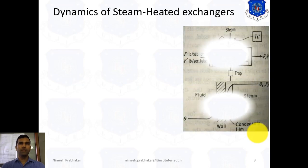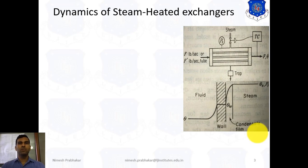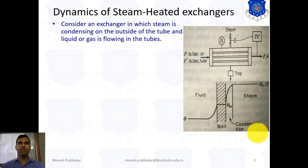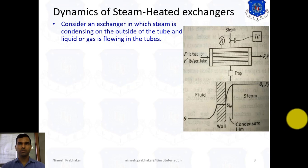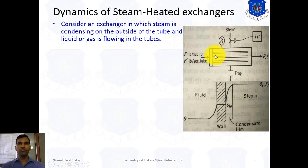Here we consider one heat exchanger. This is a simple tube and shell-tube type heat exchanger. We know the operation of shell-tube type heat exchanger. Consider an exchanger in which steam is condensing on the outside of the tube and liquid or gas is flowing in the tube. That means liquid is flowing in this tube and steam is flowing surrounding this tube.